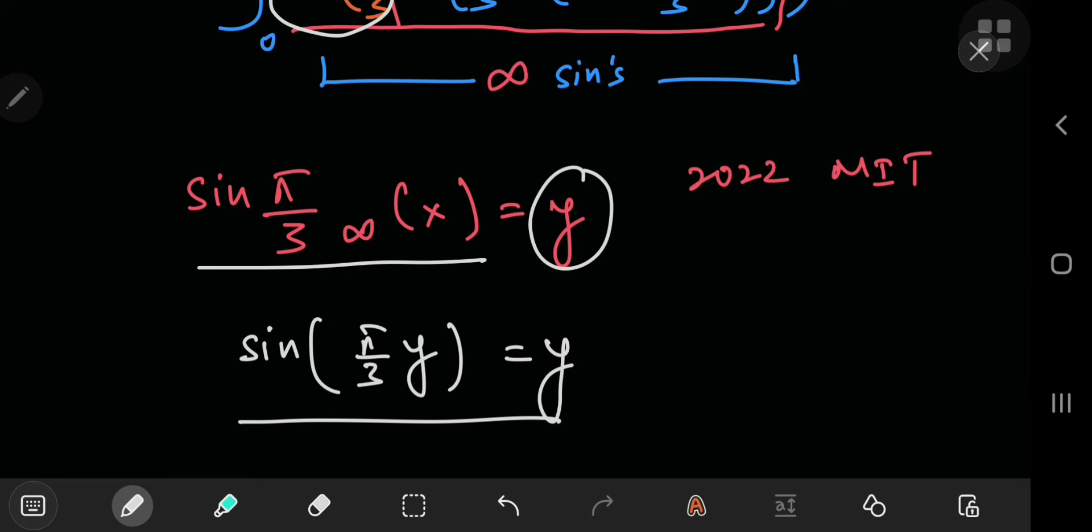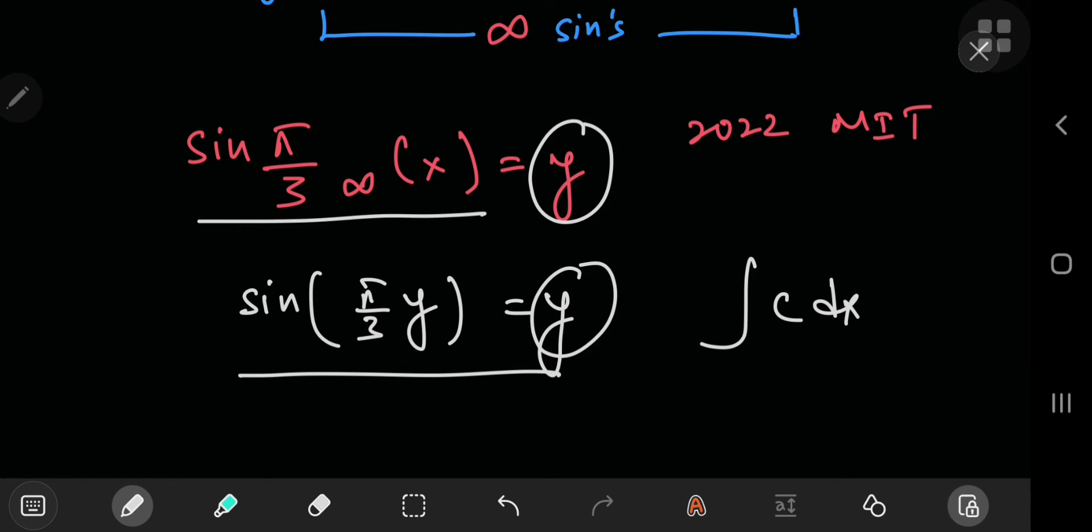Now if I solve this equation, this will give me some value of y that I can substitute in place of that infinitely nested sine function. And that means instead of integrating something that's infinitely nested, I'm integrating one particular value or one particular real number. So integrating a constant is pretty easy, right?